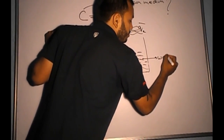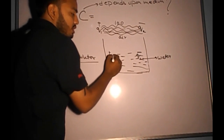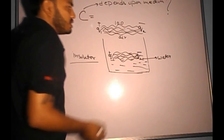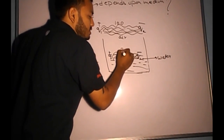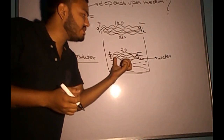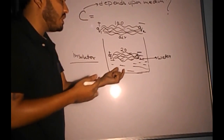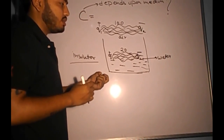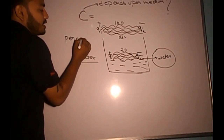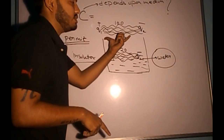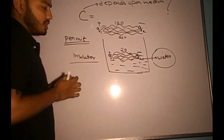Suppose we dip the charges in water. When we go into water, some of the strings are blocked. The force between the charges decreases by a factor of 80, because water is allowing or permitting its own force to interfere between the forces between these charges.